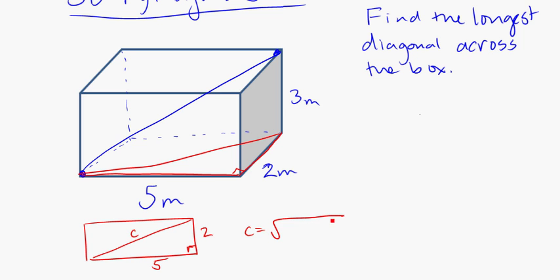We'll call it C here. C will be equal to the square root of five squared plus two squared, and that is going to be equal to square root of 29, which you can leave like that, or if you're not comfortable with that, 5.385.